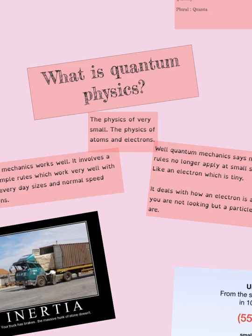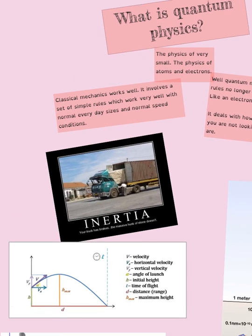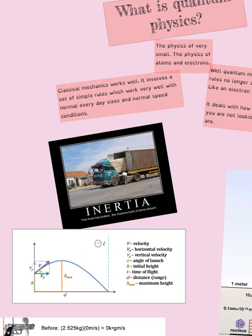Hi everyone, I hope you're all doing well and staying safe. This is going to be a video about quantum physics — chapter 13 of your OCR A-level physics books from Oxford. Quantum physics is the physics of very small, micro-scale level explanations — atoms, electrons, light, how they behave and how they interact with matter. Classical mechanics involves simple rules that work with everyday sizes and normal speeds, like objects we can see and car speeds.